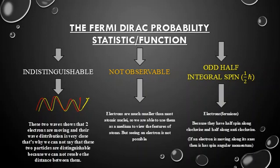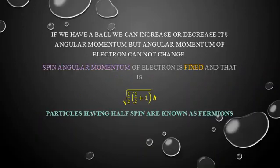Spin angular momentum is associated with the particle's motion. Unlike a ball whose angular momentum can be changed, the spin angular momentum of an electron is fixed. Its value is given by the square root of one-half times (one-half plus one) times h-bar. Particles having spin one-half are known as fermions, as explained in quantum mechanical treatment.